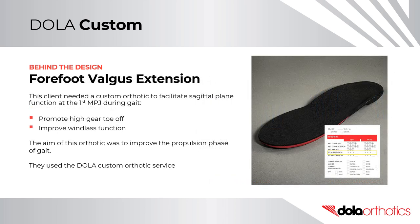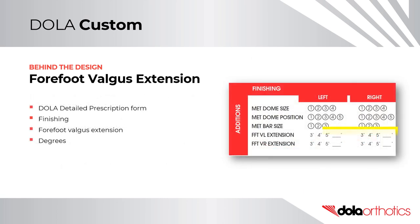Behind the Design – Forefoot Valgus Extension. This client needed a custom orthotic to facilitate sagittal plane function at the first MPJ during gait. They needed the orthotic to promote a high gear toe-off and improve windlass function. The aim was to improve the propulsion phase of gait. They used the Dollar Custom Orthotic Service and selected the number of degrees for the forefoot valgus extension in the finishing section of the prescription form.